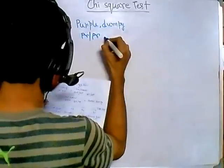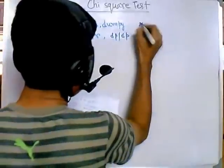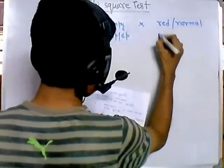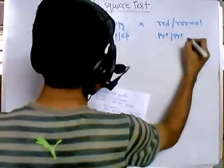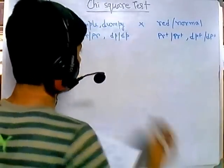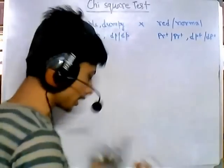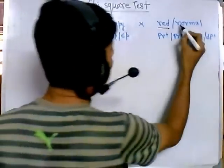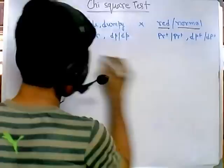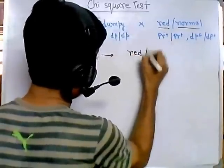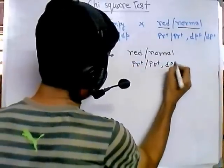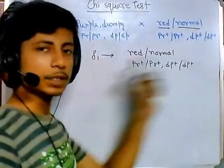The first type is PR PR and DP DP, and it is crossed with red eye with normal wings, termed as PR+ PR+ DP+ DP+. These are the characteristics we need to cross. Red eye is the dominant trait and normal wing is dominant. So in the F1 generation, all of the progeny will have the phenotype of red eye and normal wings, with genotype PR+ PR+ DP+ DP+.